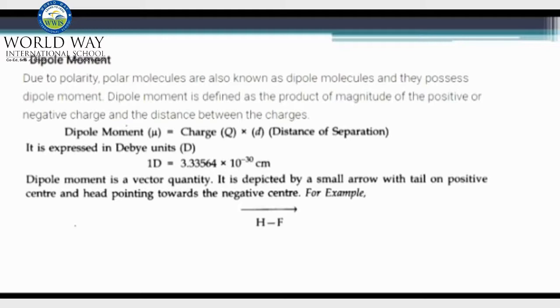One Debye is equal to 3.335 into 10 to the power minus 30 centimeter. It has both direction and magnitude, so it is a vector quantity. It is depicted by a small arrow which is pointing towards the electronegative center.